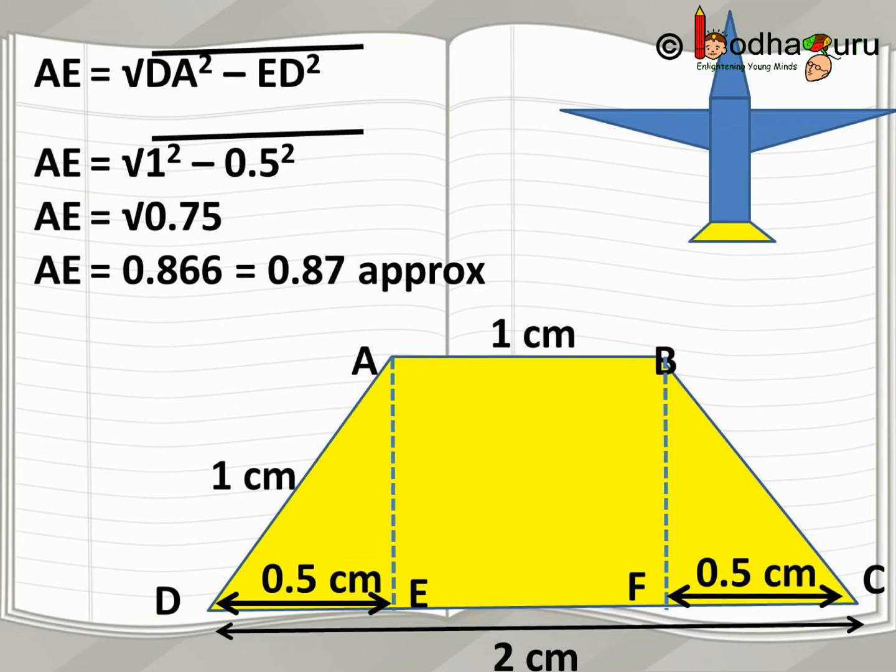0.75 is not a perfect square. So, we can find the square root value till 3 to 4 decimal places and that would be sufficient for us. Square root of 0.75 is equal to 0.866 cm, approximately equal to 0.87 cm.